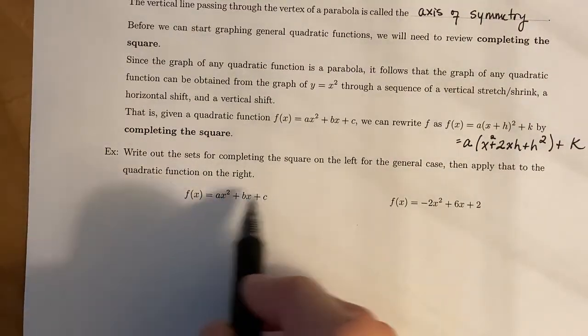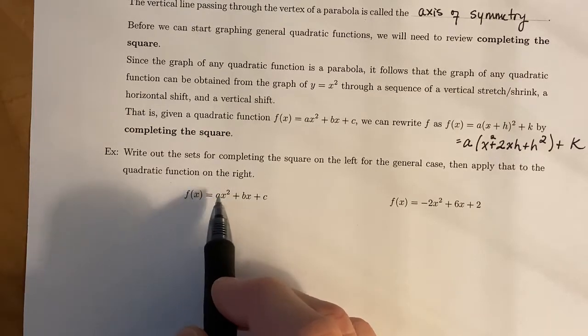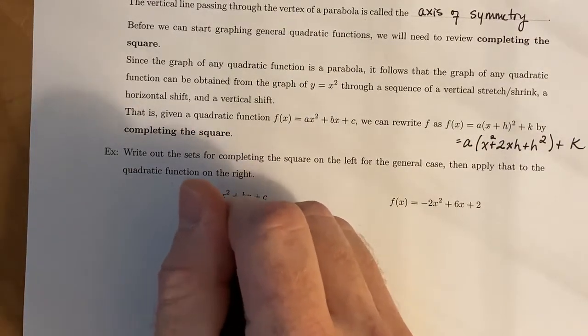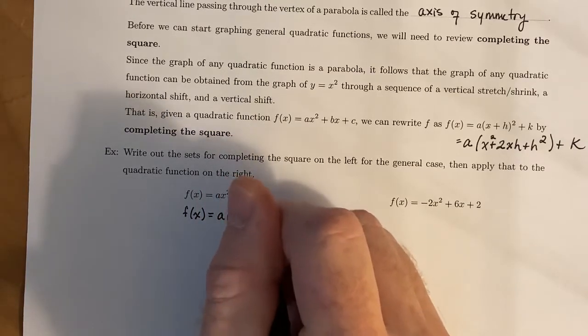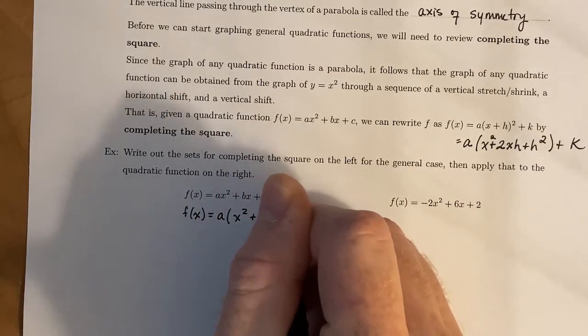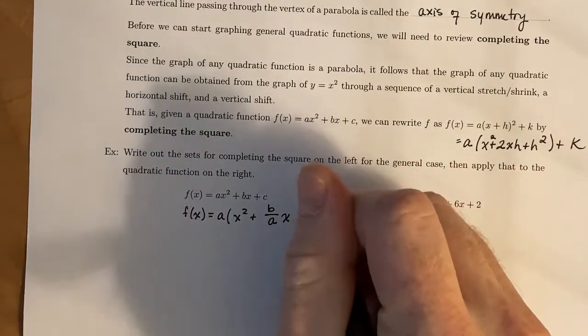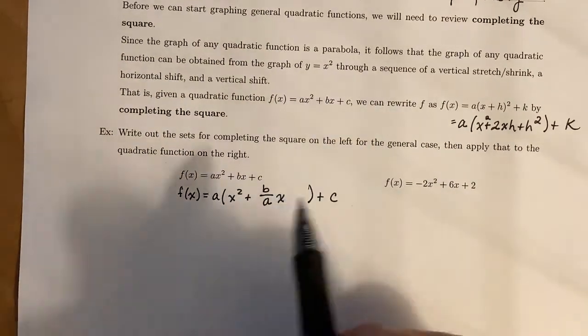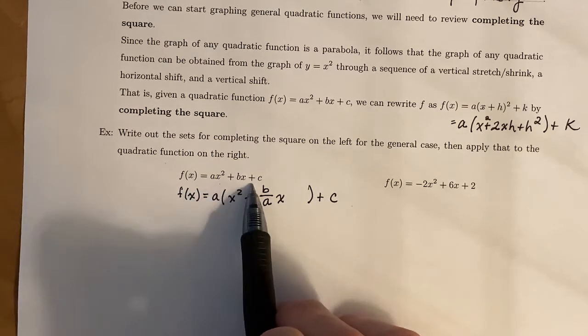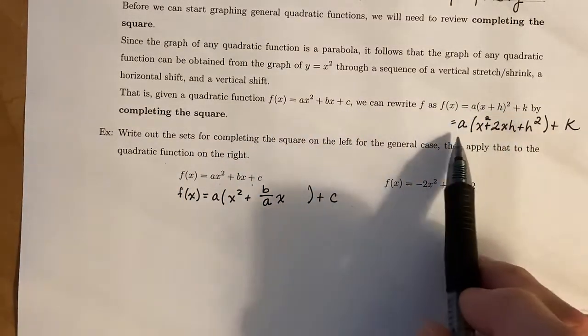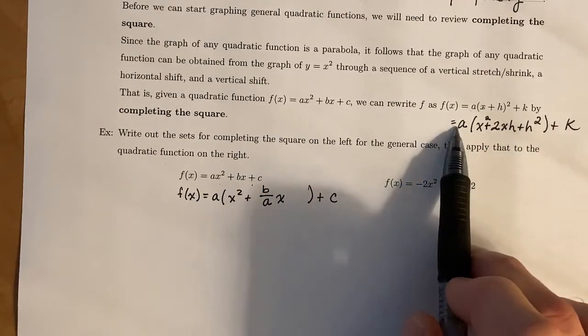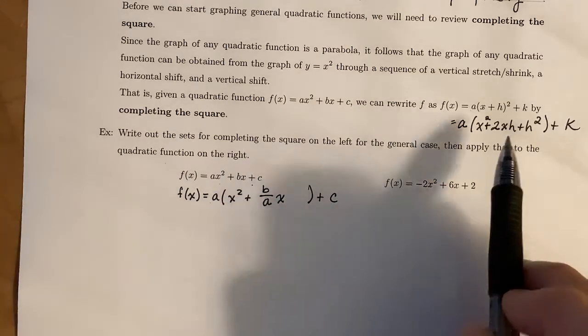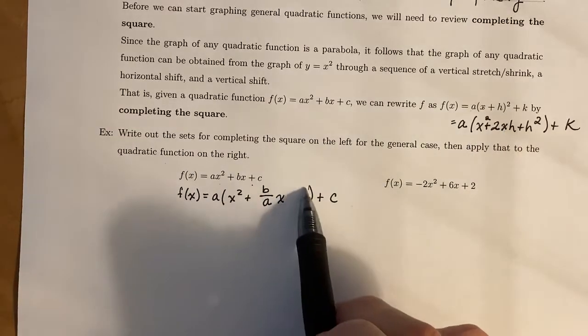So to begin, in the general case, we need to factor out a from both the x² and the x term, but not the c term. So that gives us (b/a)x. I'm going to leave a little bit of space right here. And that c, we did not change at all. Now, since we're looking to take this expression and turn it into something that looks like this, this would be the intermediate step. So notice that we have the a out front, we have an x² as the first thing, then we have plus something times x. And then we need to figure out what goes right here.